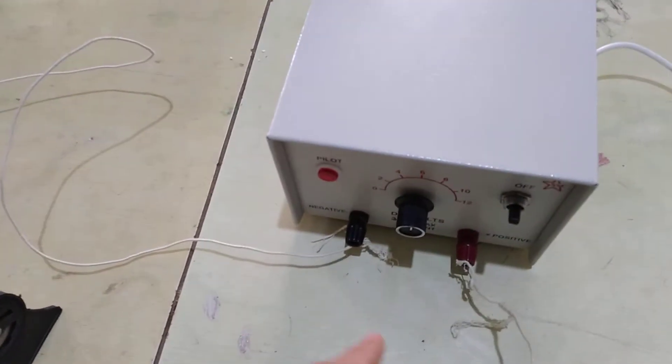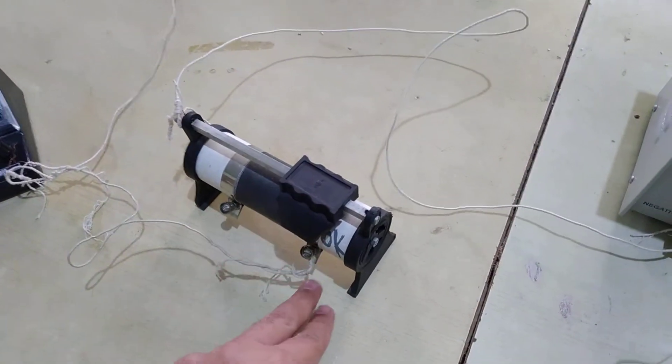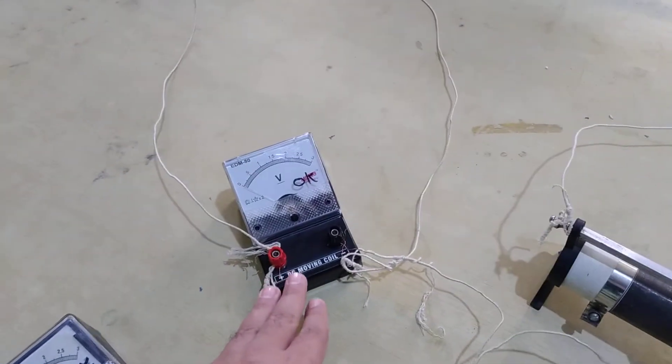So here you can see the battery. One terminal of the battery is connected with the rheostat and the second terminal is connected with the voltmeter.